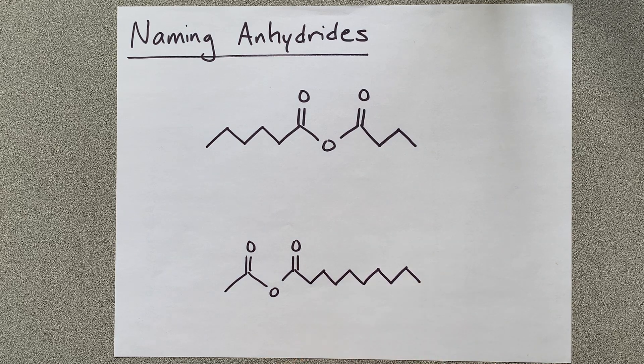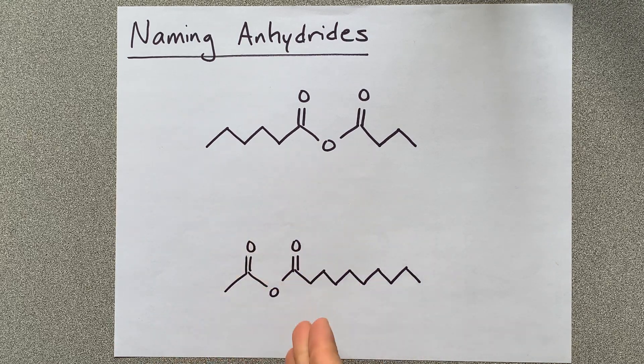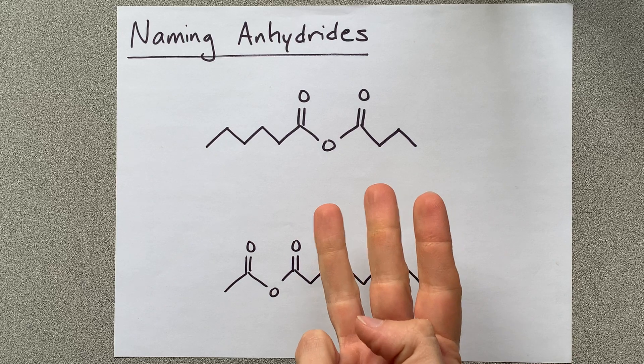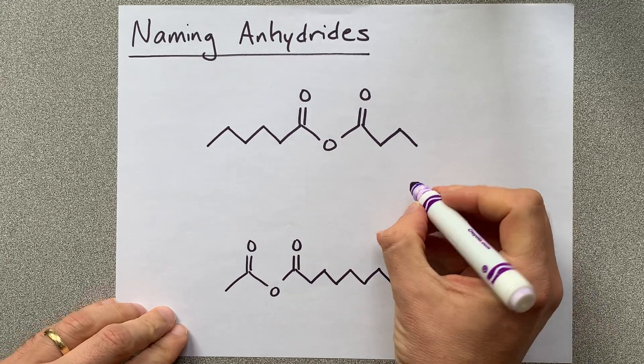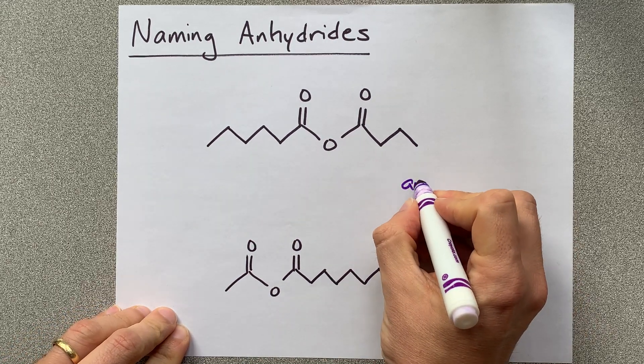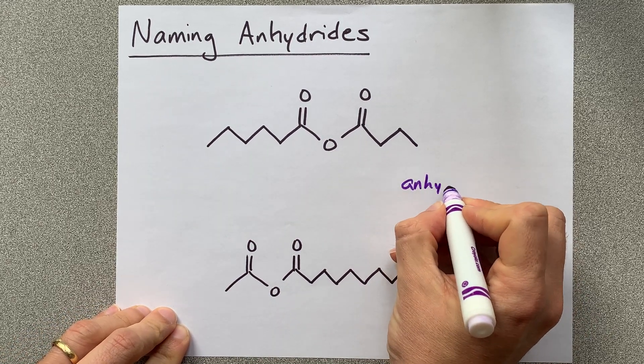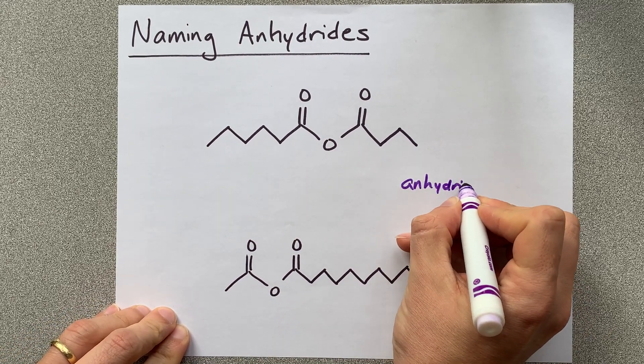A quick lesson on naming anhydrides. Each of these names is going to be three words long. The final and third word of each is going to be anhydride.